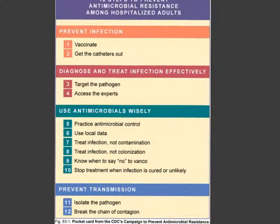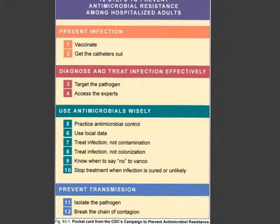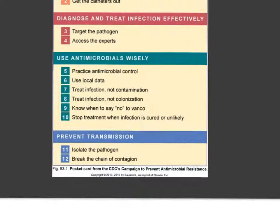Prevention includes keeping patients vaccinated, particularly against flu and pneumonia. Every day, if a patient has a urinary catheter, ask yourself whether they still need it or if it can come out. There's a difference between a medical need and a convenience — having a catheter for an incontinent patient is convenient but not always medically necessary. Also use antibiotics safely and wisely, and prevent infection through good hand washing and using barriers.